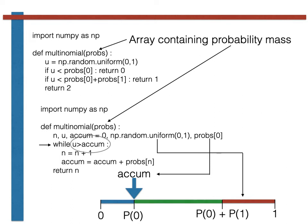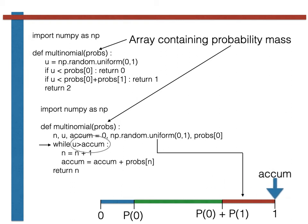For our illustrative purposes, we are supposing that u fell within the red segment of the line. We thus enter the while loop and increase n by 1. We then add probs[1] to acume, shifting its value from the end of the blue segment to the end of the green segment. We are now back at the while loop and u is still greater than acume, so we pass through the loop again. n is increased to 2 and probs[2] is added to acume. Now the proposition in the while loop is no longer true, so we break out of the loop and the function returns 2, as it should.